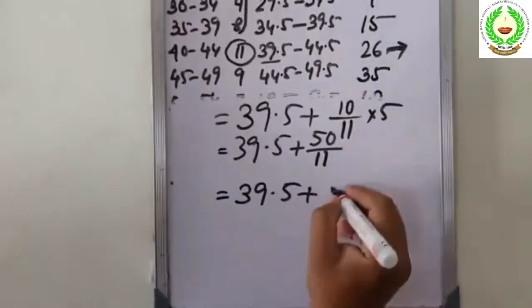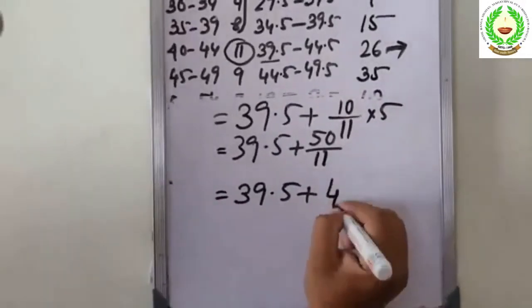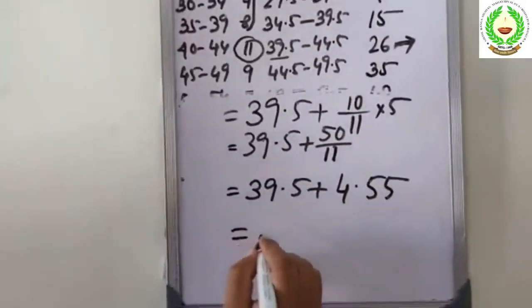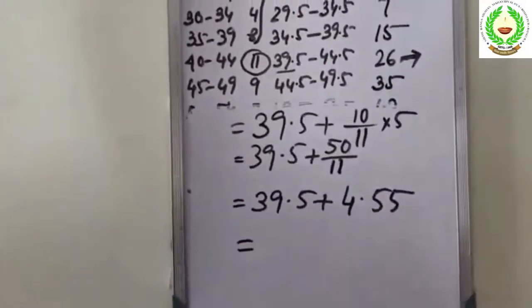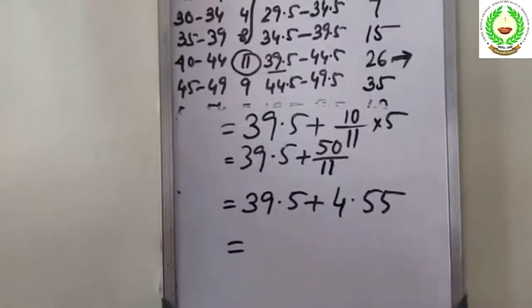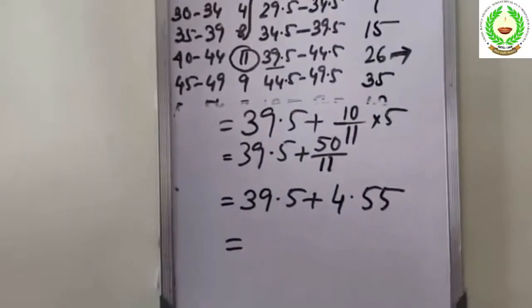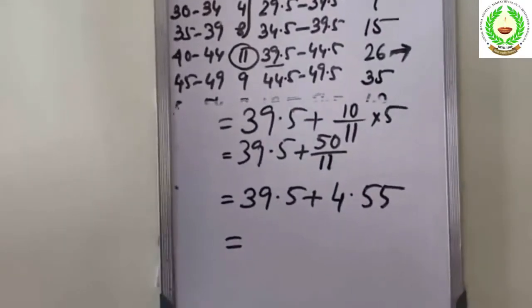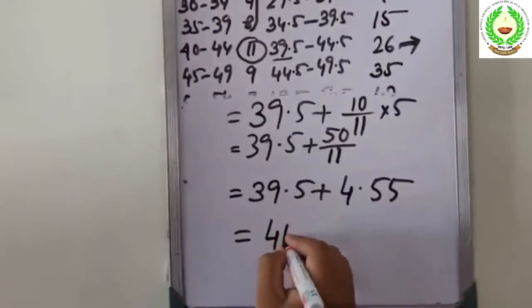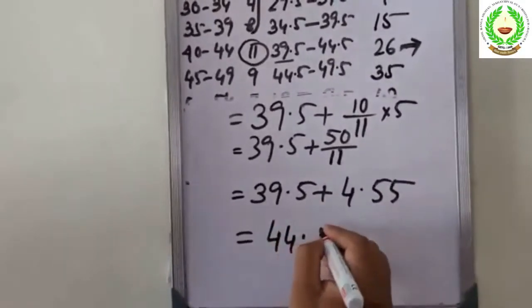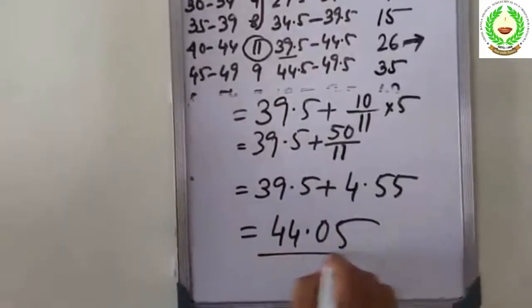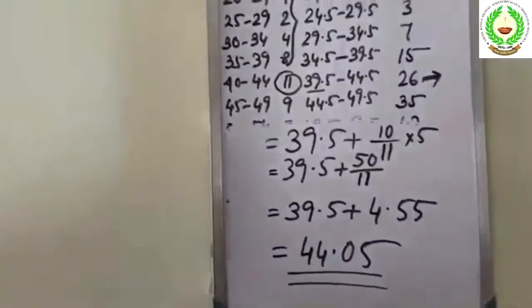Applying the formula: Median = 39.5 + (25 − 15) / 5 × 5 = 39.5 + 4.55 = 44.05. So the median is 44.05.